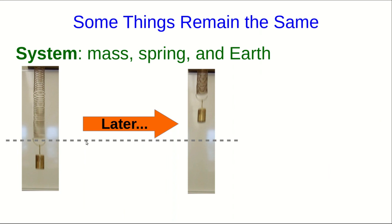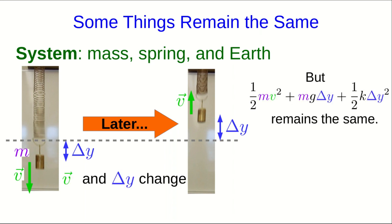Similarly, in the case of a mass oscillating up and down on a spring, the velocity of the mass and its distance above its equilibrium position is also changing constantly. And yet, there's this even more complicated quantity involving both the speed and the distance above the equilibrium position, which remains the same.